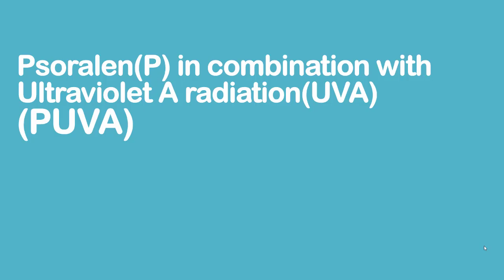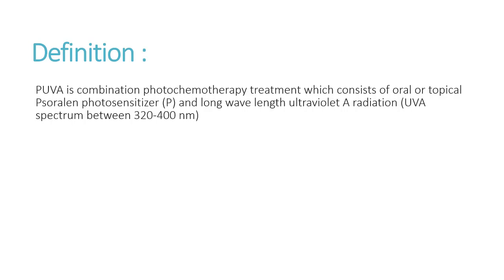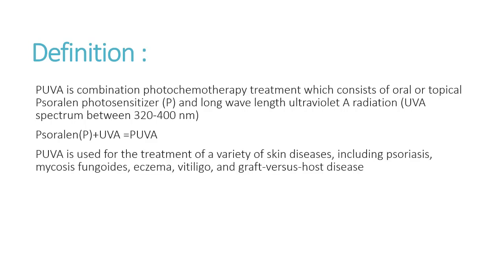Today we are going to talk about psoralen in combination with ultraviolet A radiation, or PUVA therapy. PUVA is a combination photochemotherapy treatment which consists of oral or topical psoralen photosensitizer and long-wavelength ultraviolet A radiation, the spectrum of which is between 320 to 400 nanometers. Psoralen plus ultraviolet A radiation is called PUVA, and it is used for treatment of a variety of skin diseases including psoriasis, mycosis fungoides, eczema, vitiligo, and graft versus host disease.